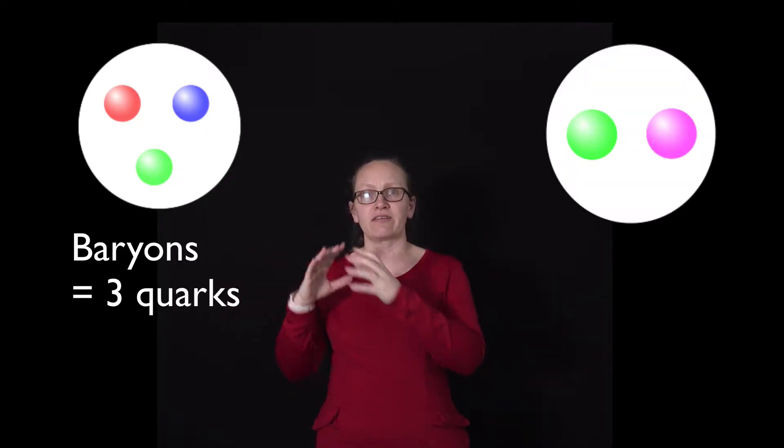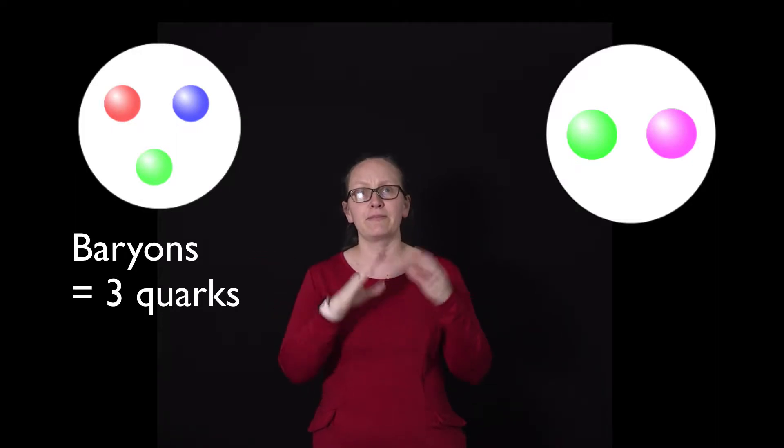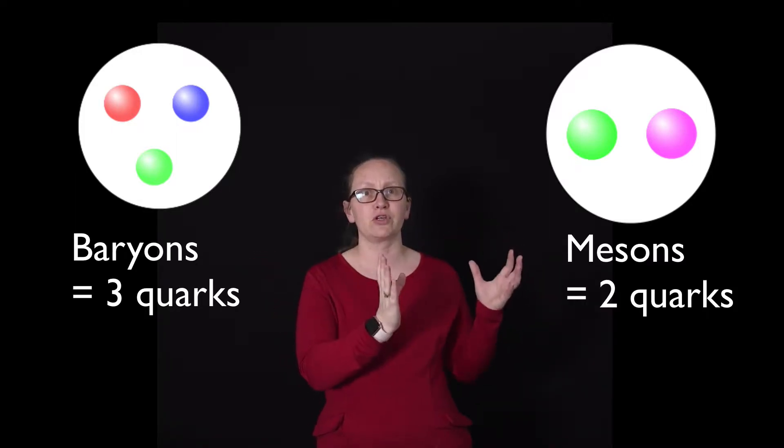Quarks cannot be found in isolation. They're always found in collections of three or two quarks. All our baryons are built up from three quarks, while our mesons are all built up from two quarks.